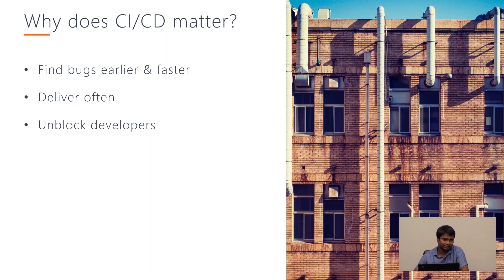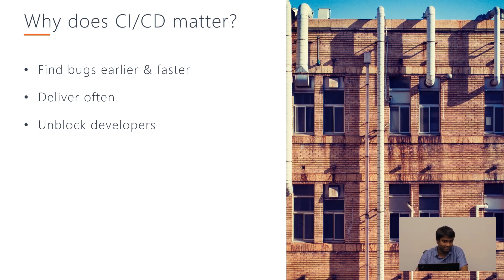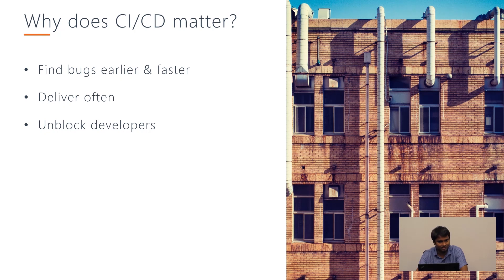Why does CI/CD matter? The software release process allows us to test and do all kinds of validations to a deployment package before it's released to a production environment. As we run tests, we can find bugs earlier and faster. If we find the bugs earlier, they are much easier and less costly to fix. We can do deliveries more often if we have a CI/CD process. It also unblocks developers — they won't have to wait to see if their build is passing, run tests manually, or integrate feature branches manually, because CI/CD pipelines do that automatically.